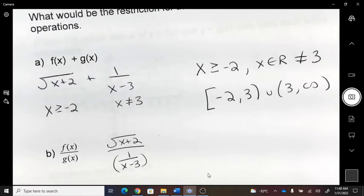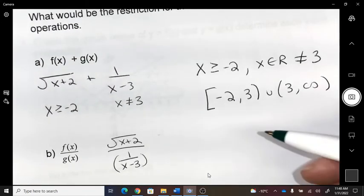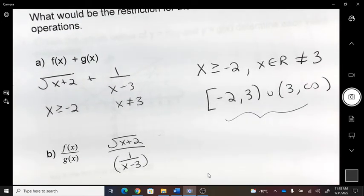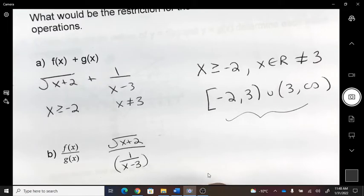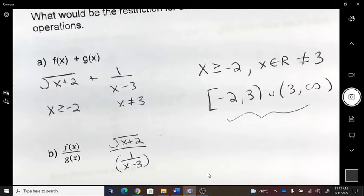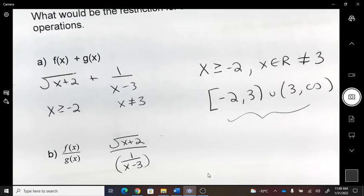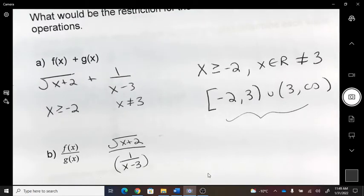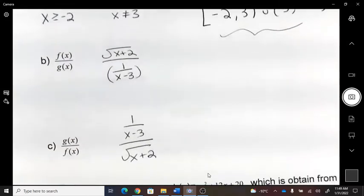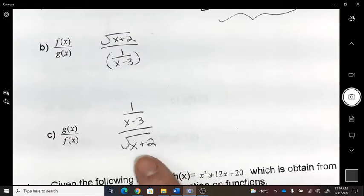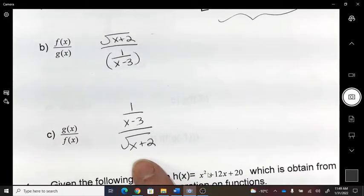Division would look like that. And again, we're talking about these restrictions. Okay, so we are not allowed to have those values for the negative two, anything lower on that. And we can't have three ever exist.